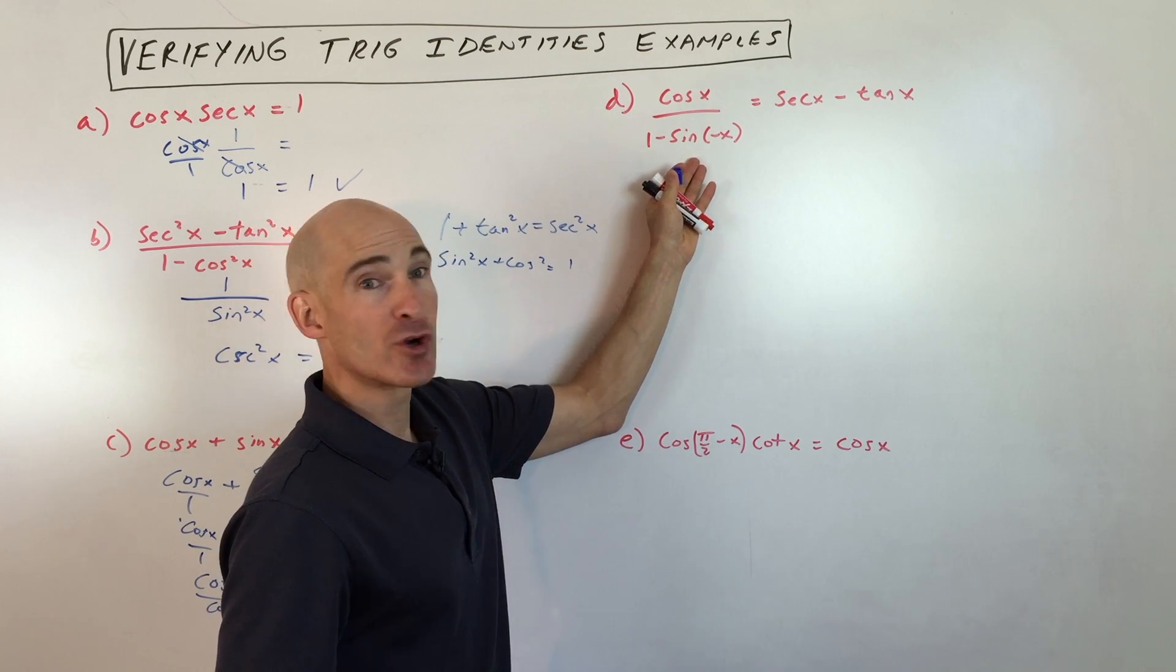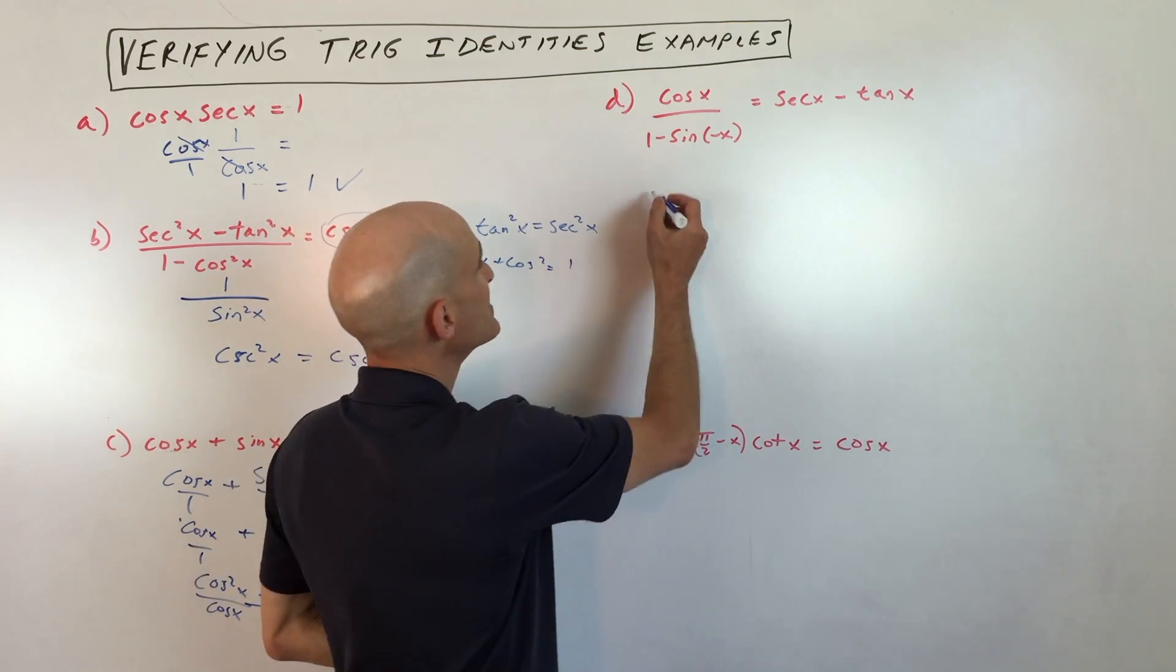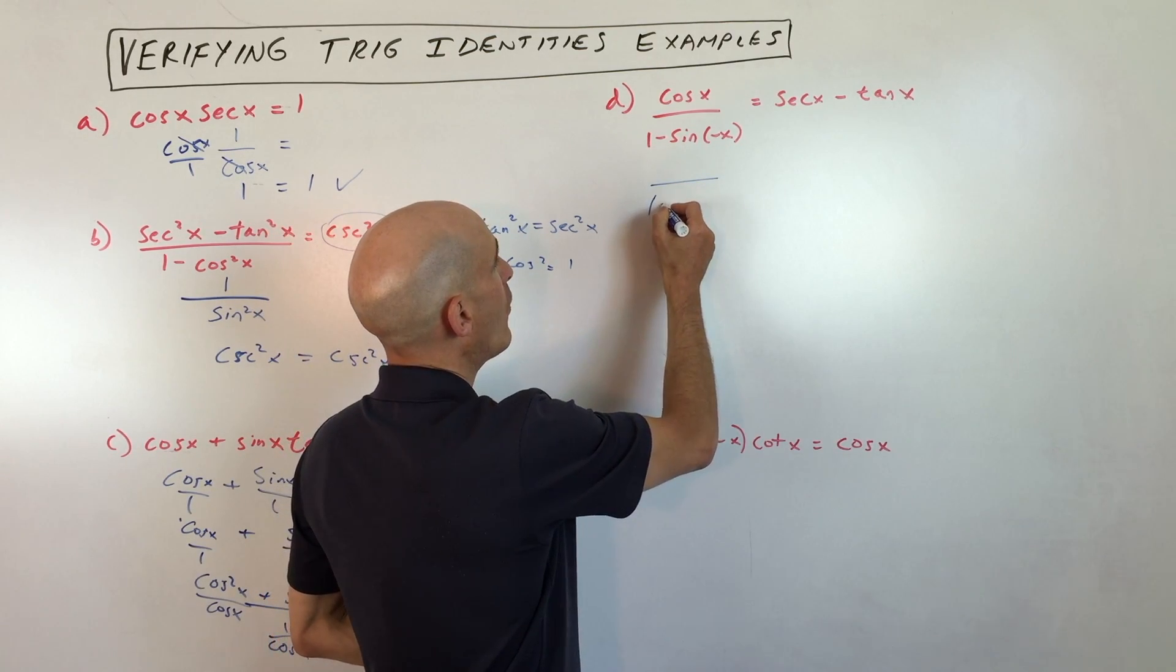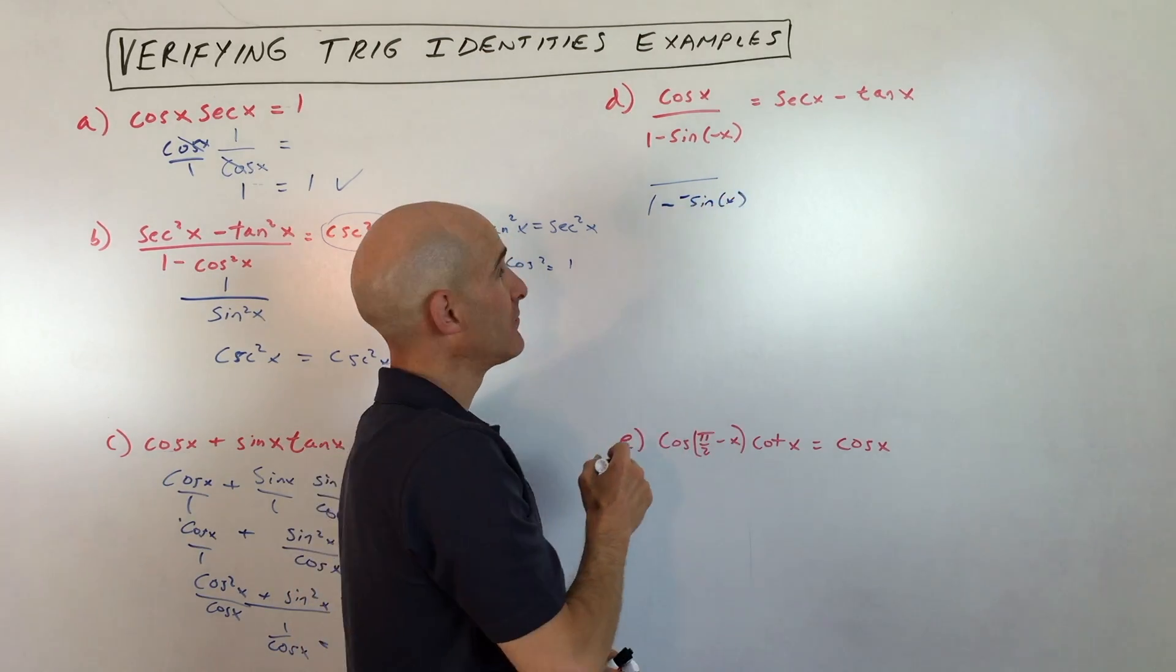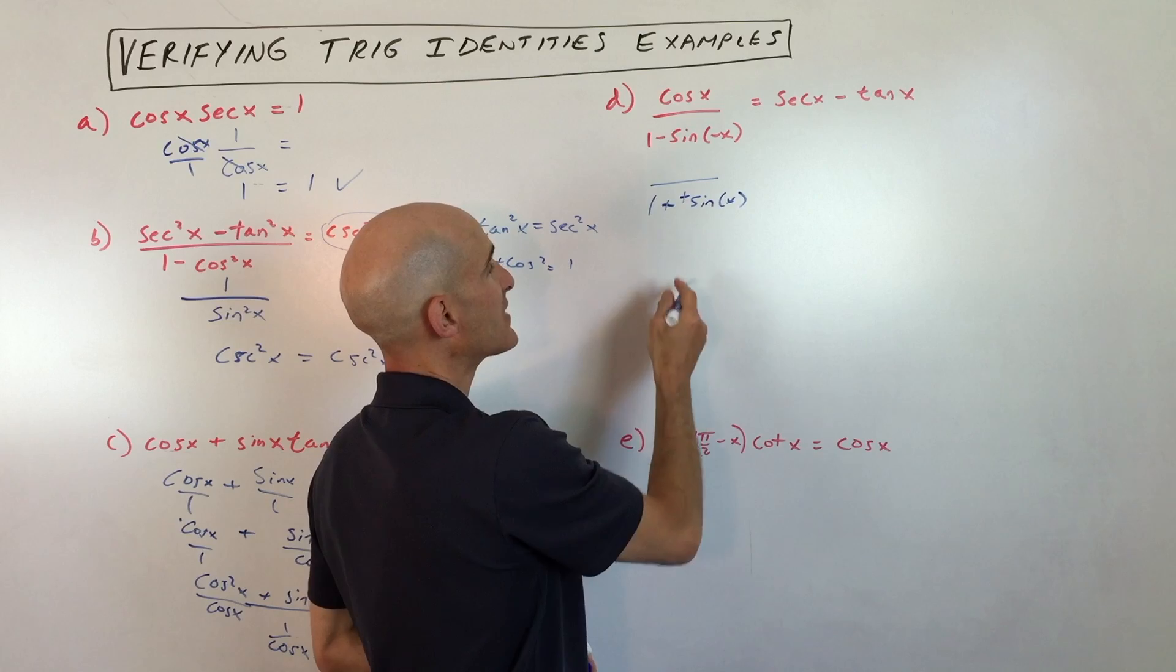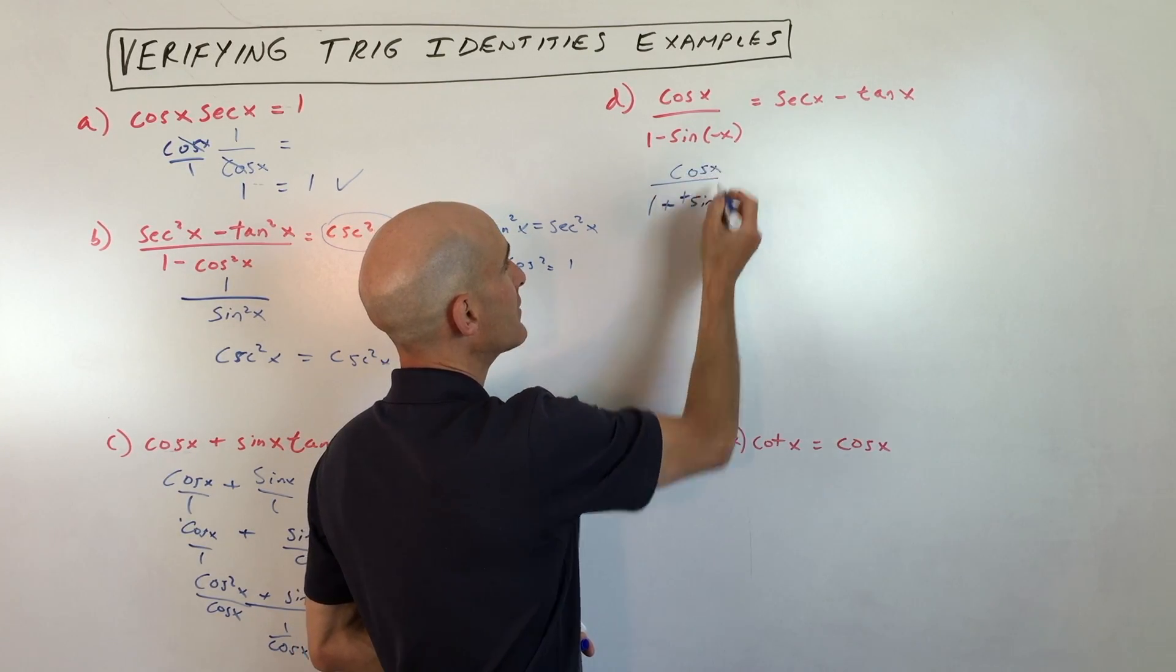So this one is a little bit more challenging. We've got sine of a negative angle. Sine of a negative angle is the same as the opposite of sine of the positive angle. And you can see these two negatives are going to cancel. So that becomes 1 plus sine of x. Numerator is still cosine of x.